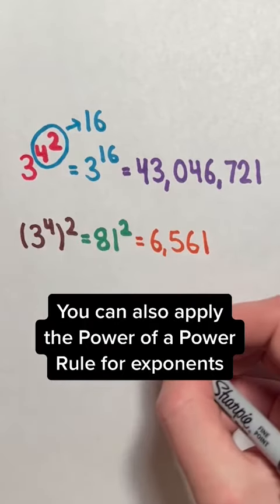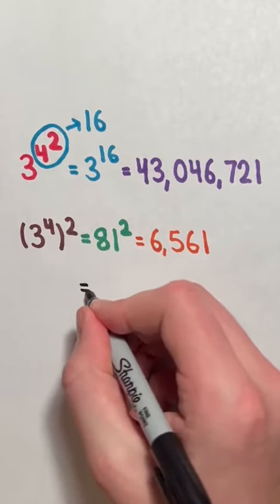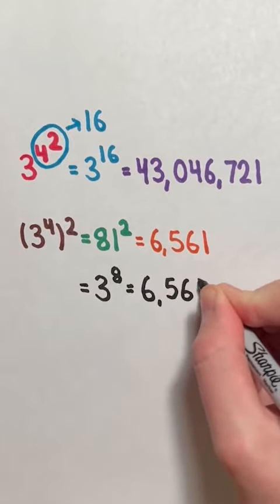You can also apply the power of a power rule for exponents by multiplying 4 and 2 to get 8, and then simplifying 3 to the power of 8 to get 6,561.